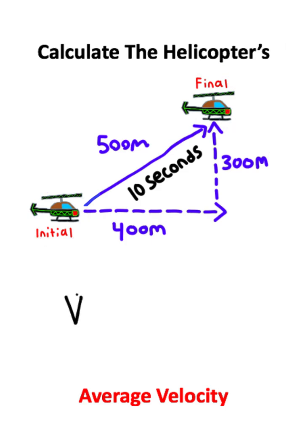The equation for average velocity is displacement over time. We have the displacement - we just calculated it to be 500 meters. We need to divide that by time, which is 10 seconds.